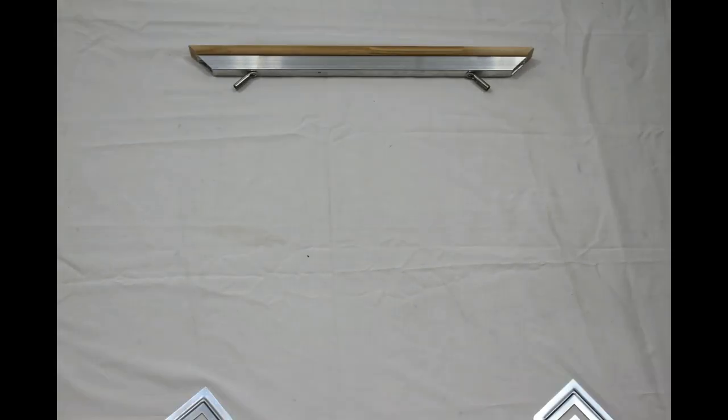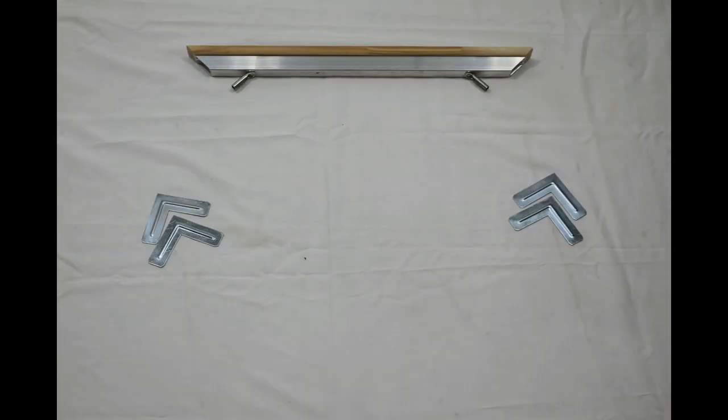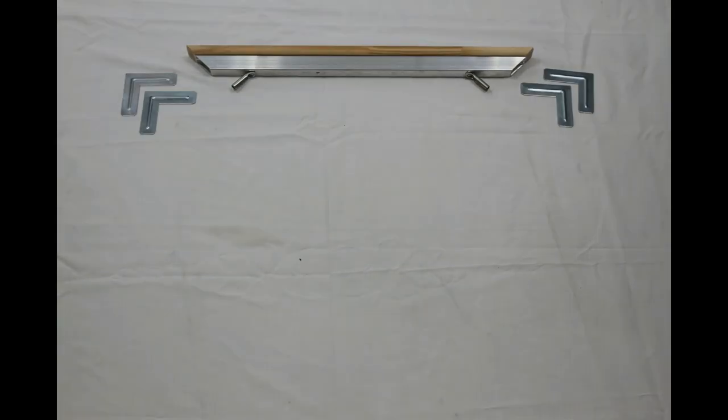Aluminum stretcher bars are the backing for canvas to be stretched over. The frame will not warp or change from seasonal or climate changes such as humidity and temperature.